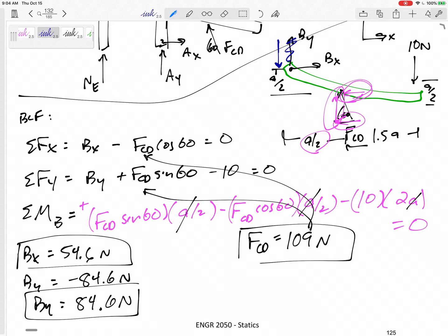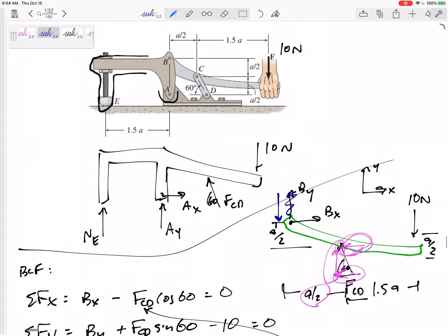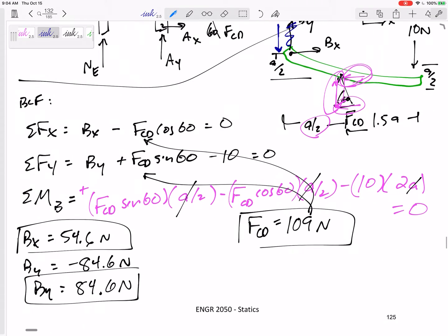I didn't look at the whole free body diagram. Also, I could have kind of looked at this member, but it would have had four, five unknowns, and so that's why I started at the handle.